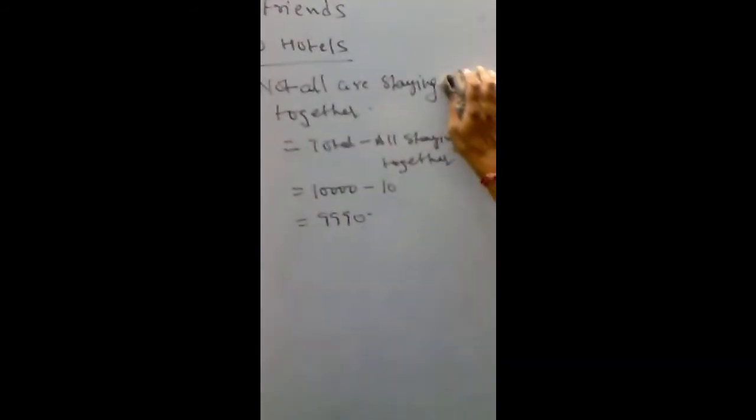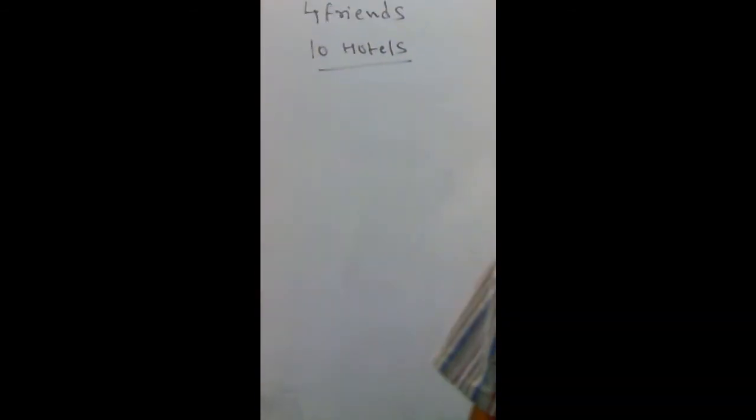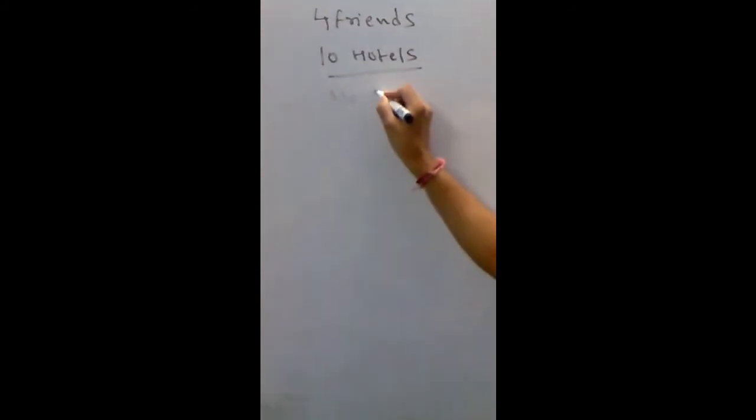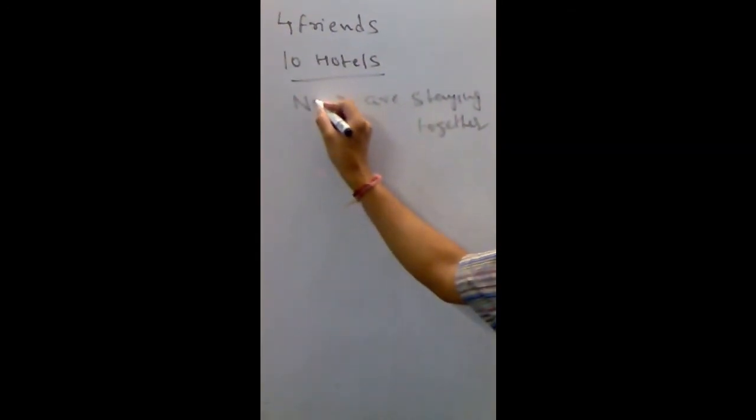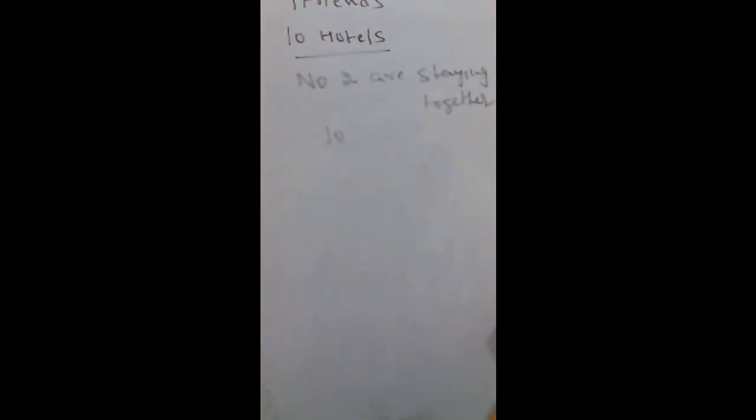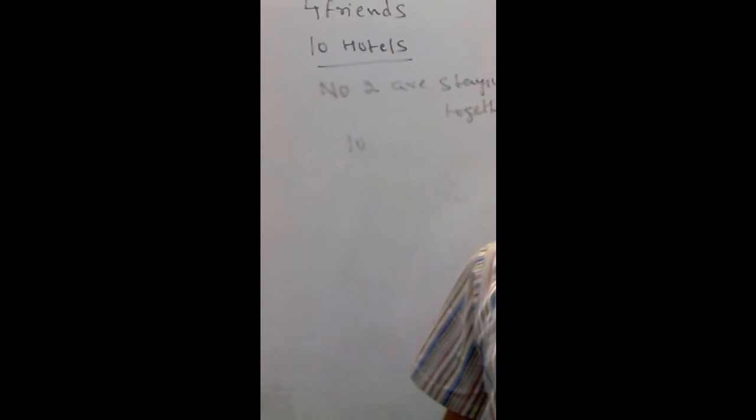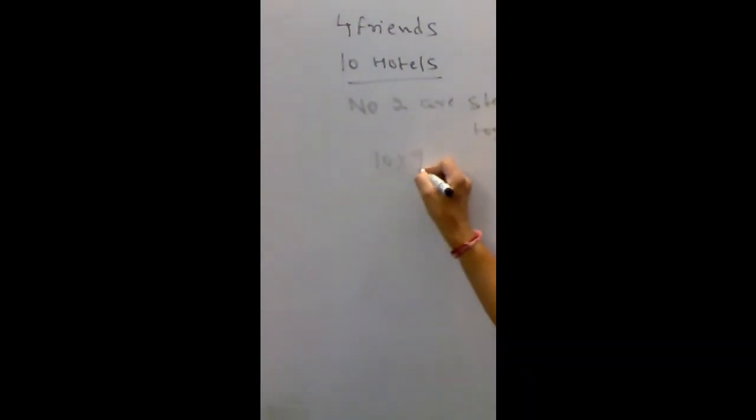Let's have another variation. Let's say the question is, no two are staying together. Think over it. No two are staying together. First friend in this case, can stay in how many ways? Ten ways. He has got ten hotels. Second friend can stay in how many ways? He can stay in nine ways. He cannot stay in the hotel in which one has already stayed. After that, he can stay anywhere in nine ways.